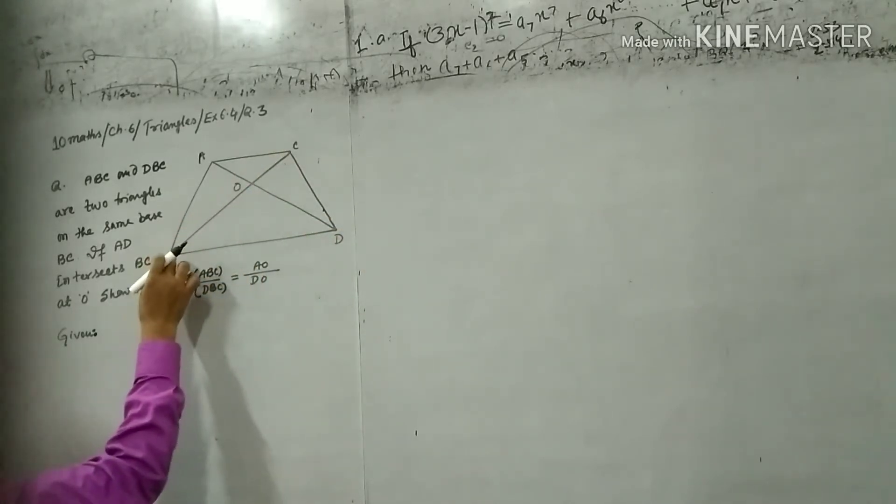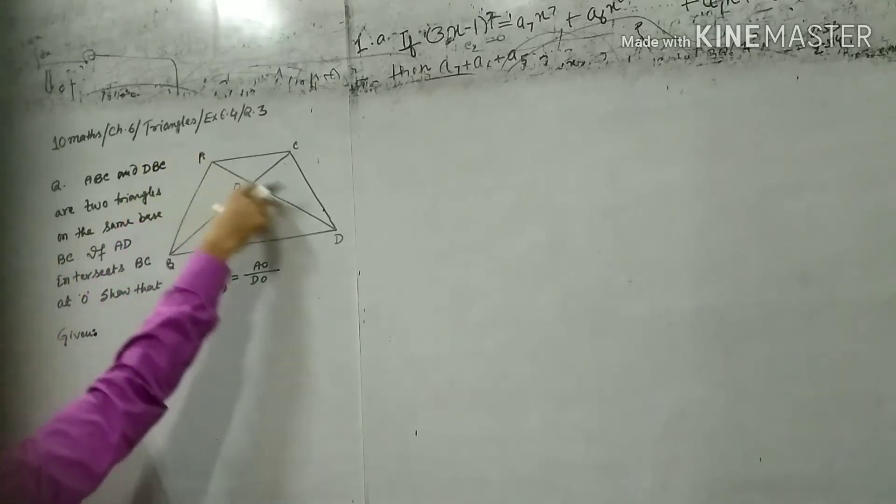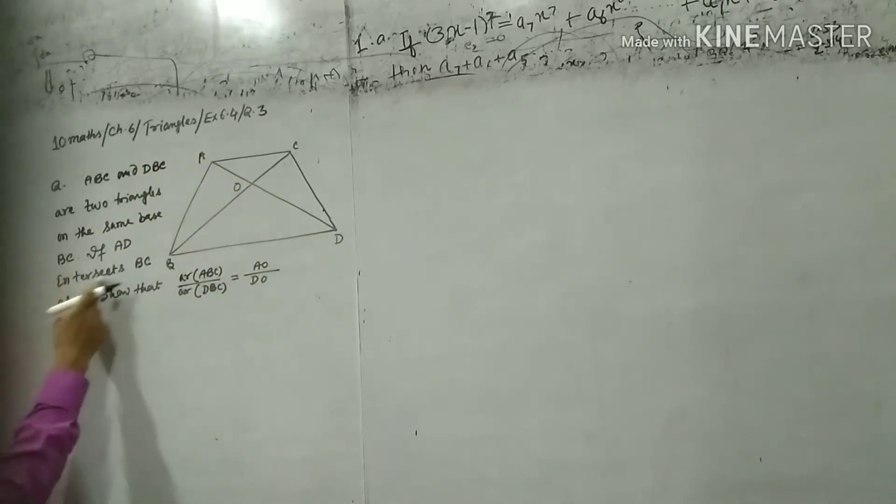Both have same base, that is BC. AD intersects BC at O.